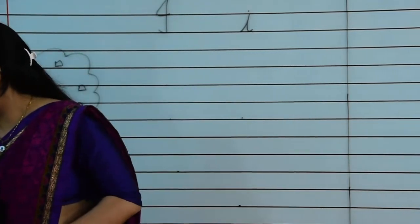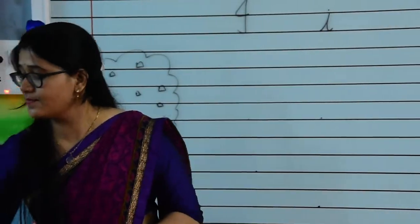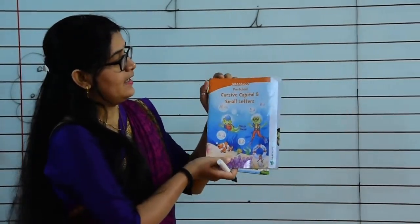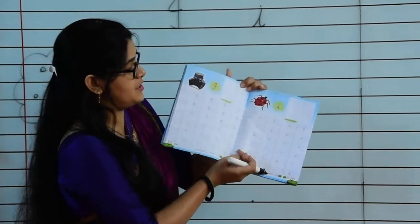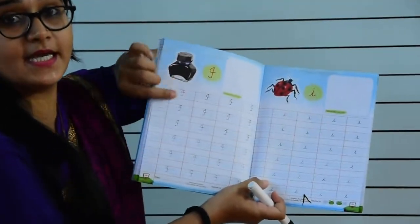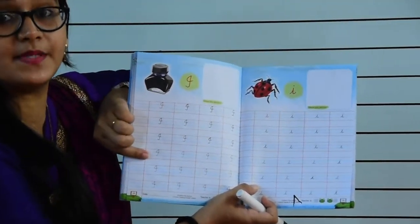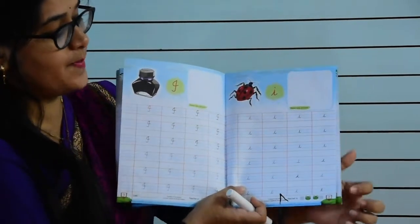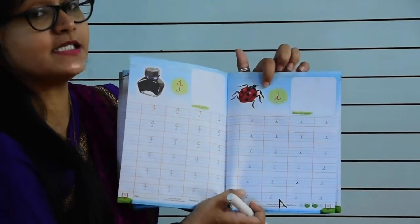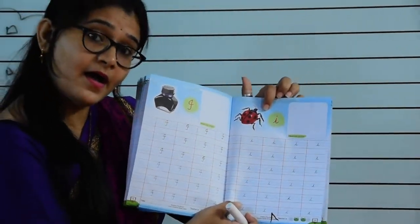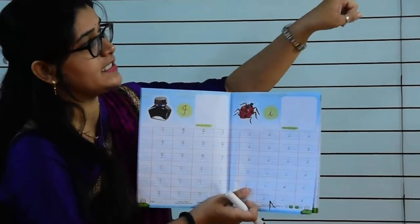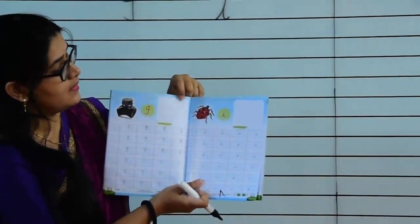So kids, let's start writing. Take out your English Graphical book. Open page number 28 — first we will write capital cursive I. And on page number 29, we will write small cursive I. So sharpen your pencil and mention the date and classwork here.